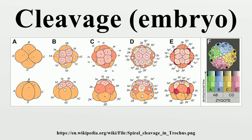Superficial: In superficial cleavage, mitosis occurs but not cytokinesis, resulting in a polynuclear cell. With the yolk positioned in the center of the egg cell, the nuclei migrate to the periphery of the egg and the plasma membrane grows inward, partitioning the nuclei into individual cells. Superficial cleavage occurs in arthropods that have centrolecithal egg cells.